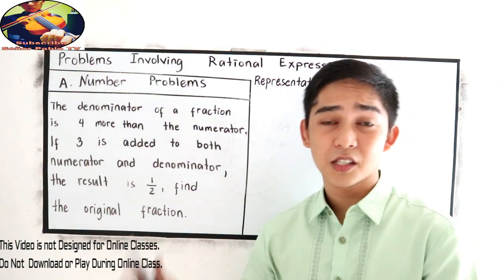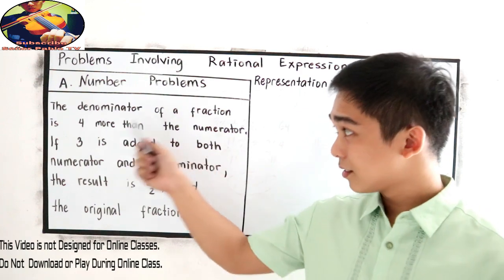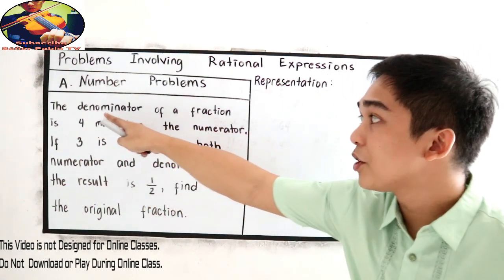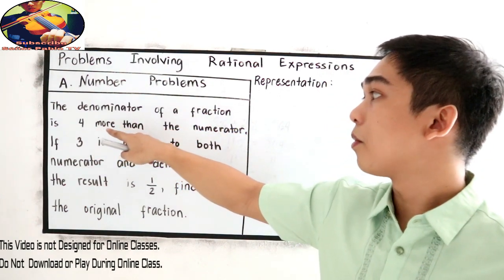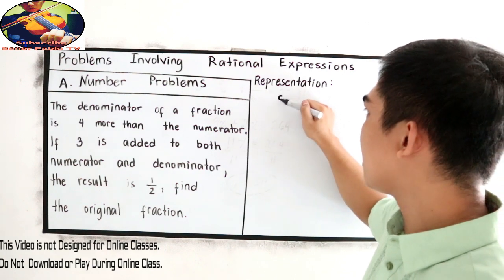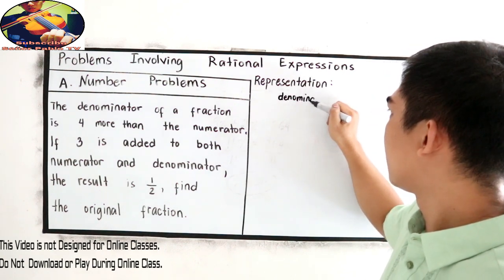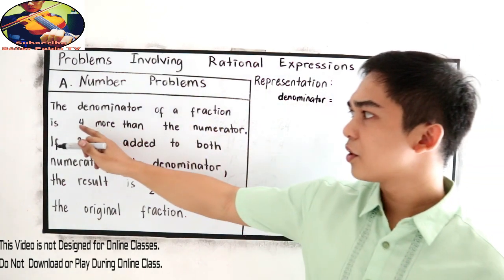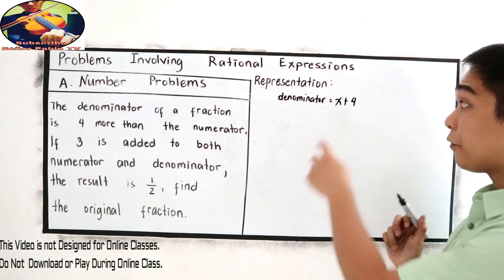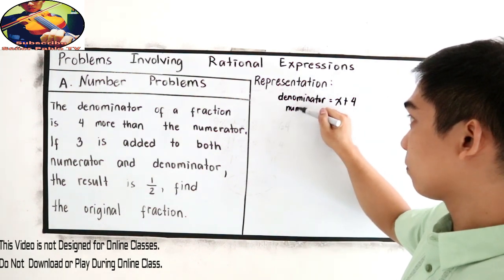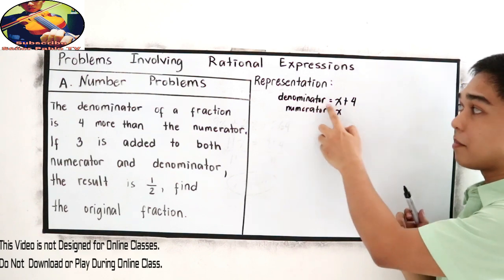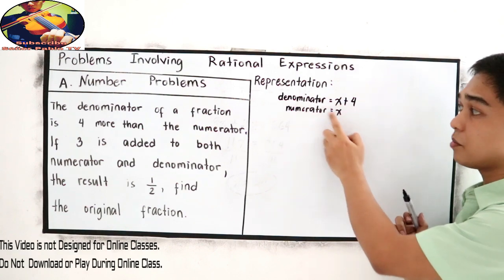In word problems, it is very important to represent our given. In our first statement, the denominator of a fraction is four more than the numerator. So we have denominator, its value is four more than the numerator. Therefore, our numerator is x. Again, the denominator is four more than the numerator, so let's say our numerator is x.